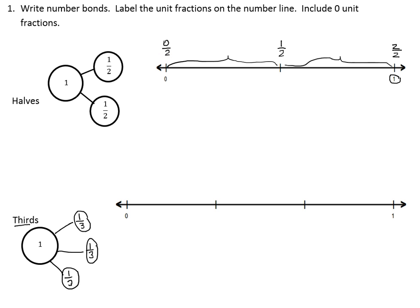On our number line, the first mark would be zero thirds. This first section represents one third. The next section represents two thirds. And then the final section makes the whole, or three thirds.